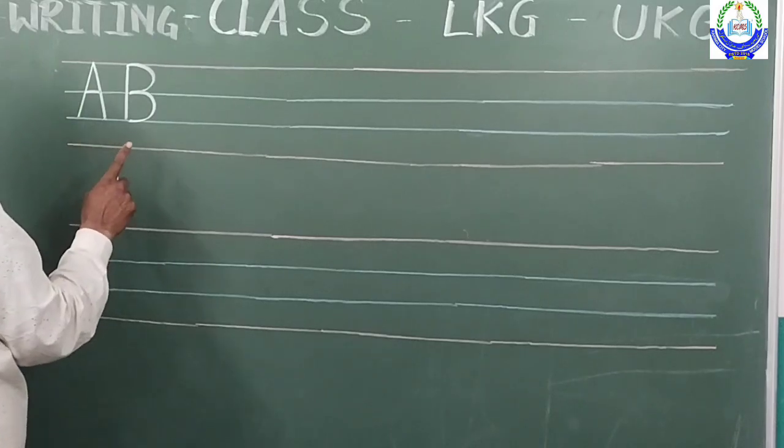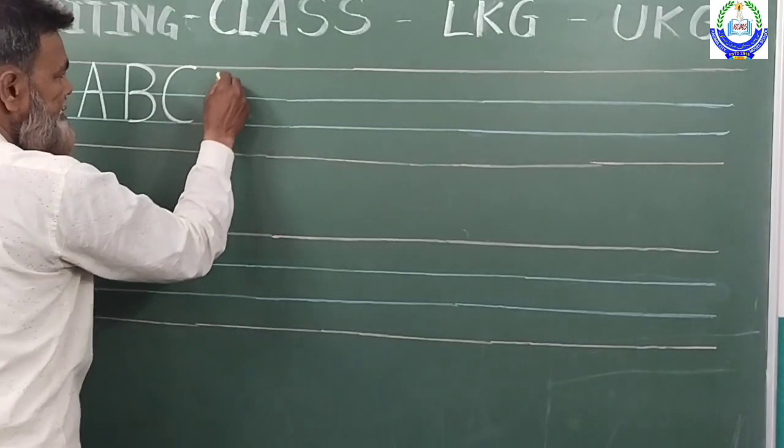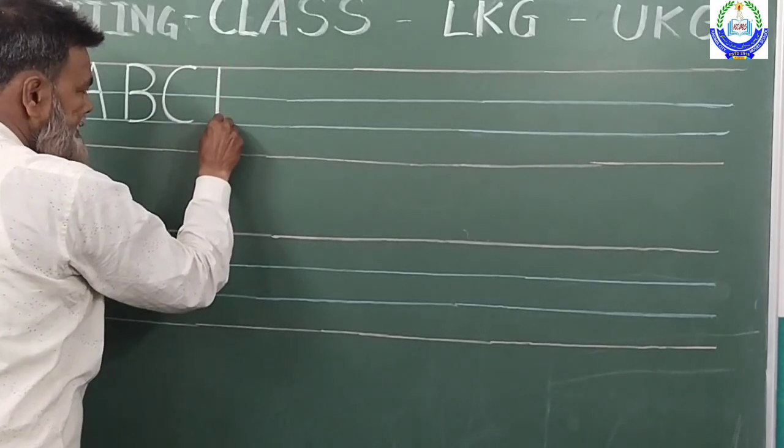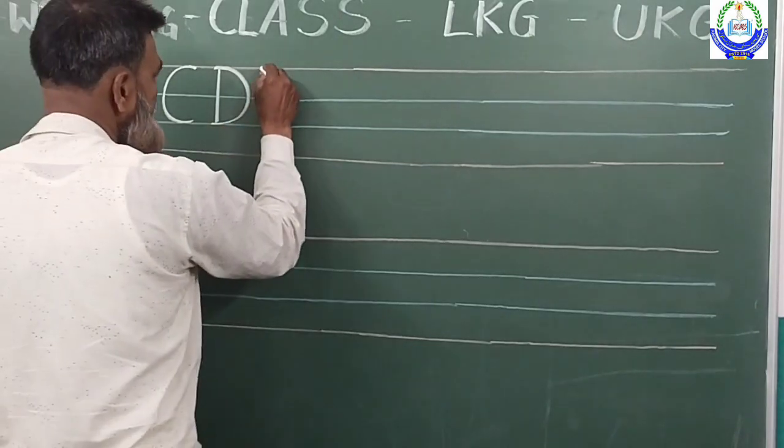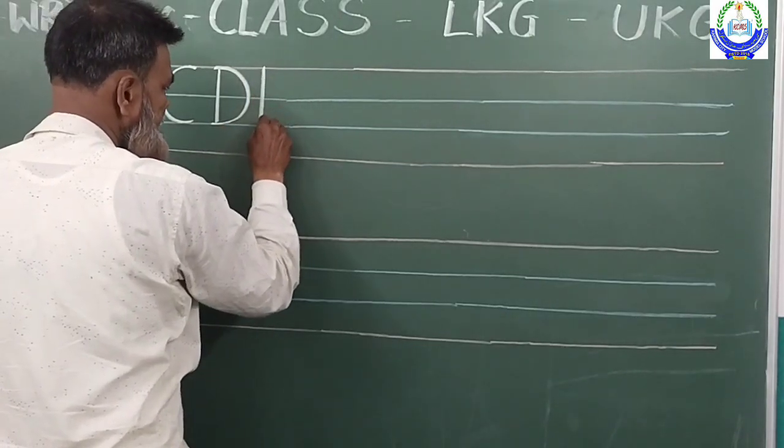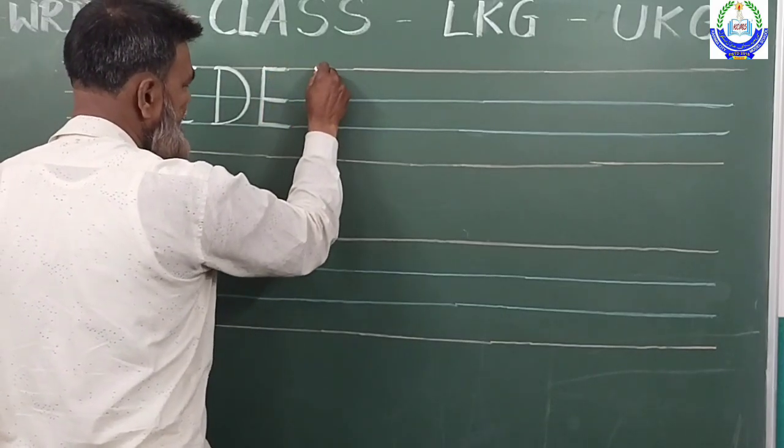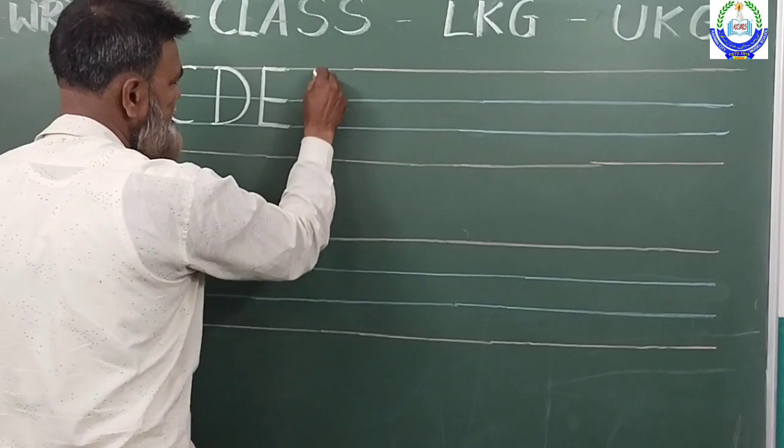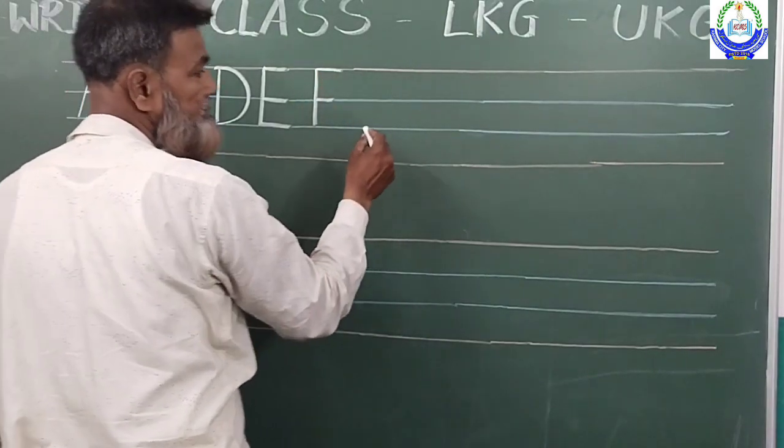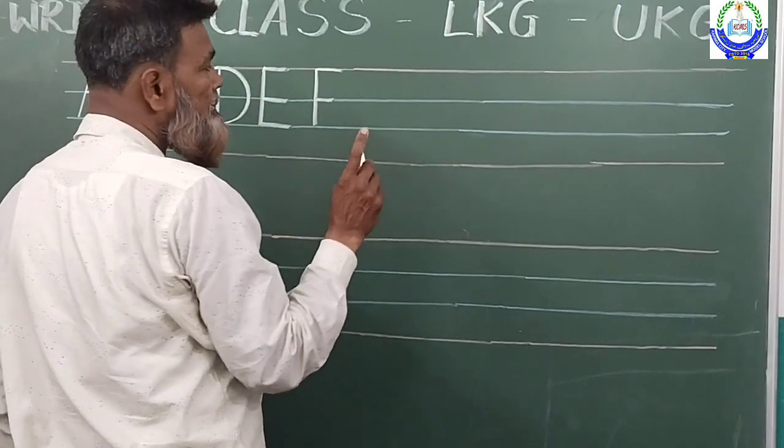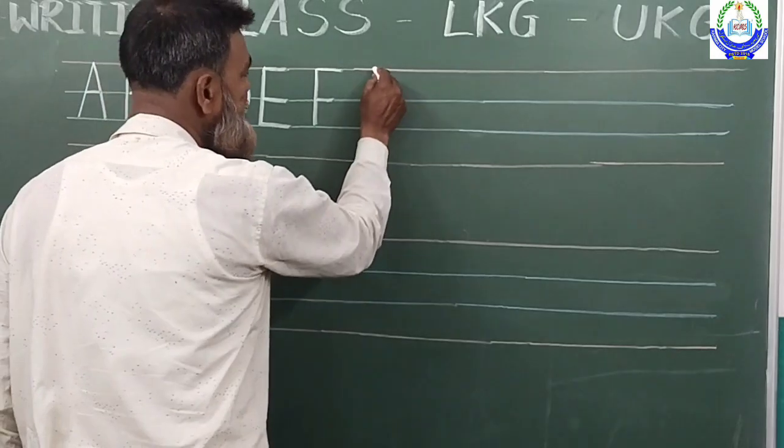You have to touch the red line to blue line in the capital letters. C, D, E, F. While you are writing, just see that you will maintain the line. F, G.